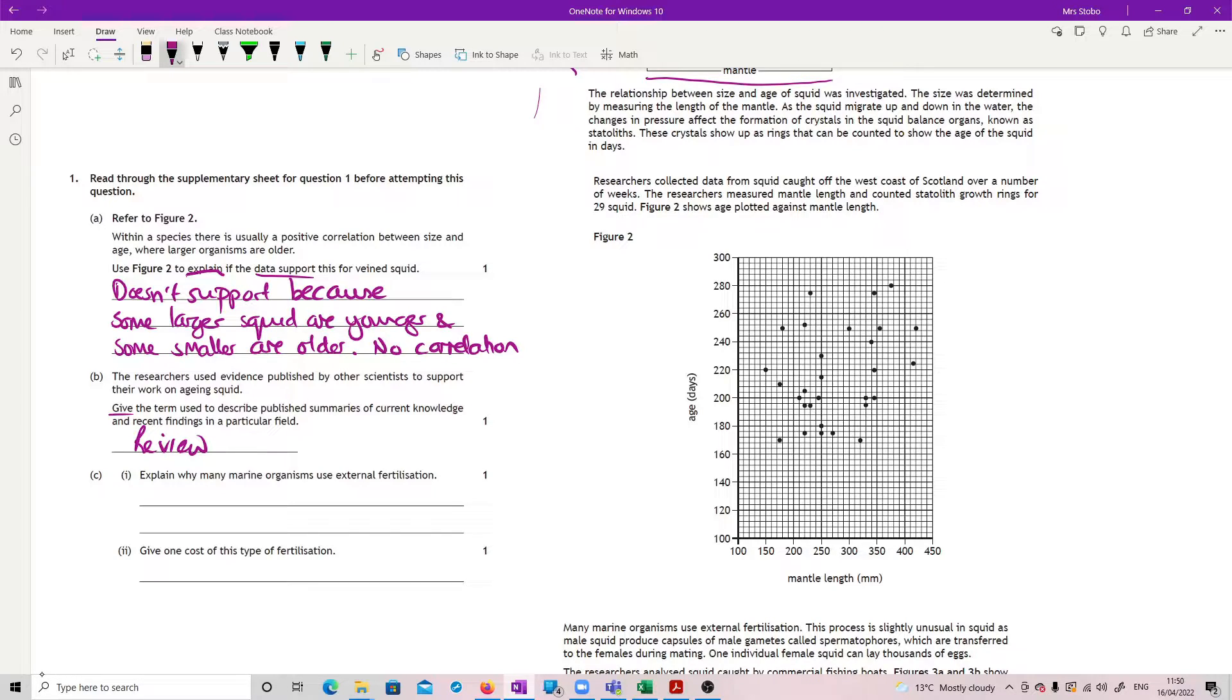Explain why many marine organisms use external fertilization. So external fertilization is where the sperm are released into water so that they can swim to the eggs. And that's really what you have to say. Sperm are released to swim in water to the eggs.